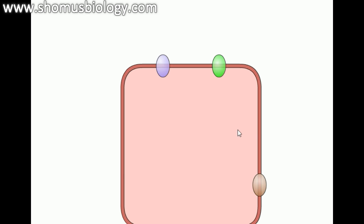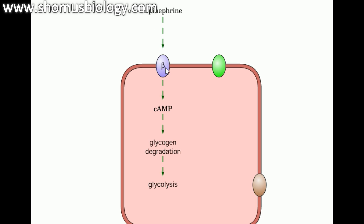In muscle cells, epinephrine binds to beta-adrenergic receptors, leading to increased intracellular levels of cyclic AMP — just as seen in liver cells. This cyclic AMP acts as a secondary messenger, activating glycogen degradation and also influencing the glycolysis pathway. So it not only degrades glycogen to produce glucose, but also induces glycolysis to convert glucose into energy molecules, elevating the level of ATP available in muscle cells when required.